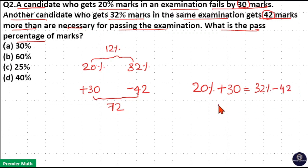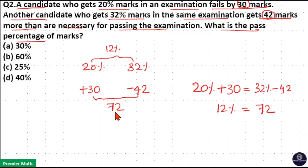So 12 percentage is equal to 72. Here the difference is 12 percentage and the difference is 72. So we equalize it: 12 percentage is equal to 72.